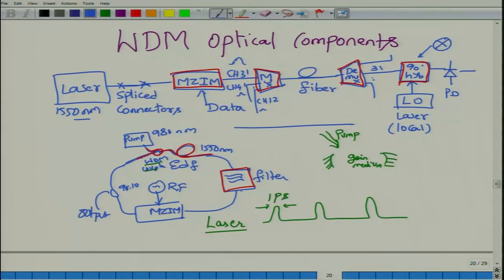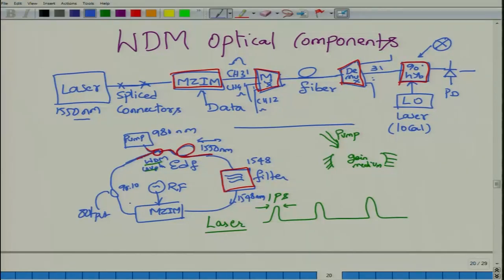For example, if you tune the filter to 1548 nanometers then the output is 1548 nanometer light circulating, which then gets modulated by the Mach-Zehnder interferometric modulator. In contrast to its use in communication systems, here the objective is not to transmit information but only to modulate the loss of the cavity — you are simply adjusting the total loss in the cavity. Nevertheless, MZIM is also a WDM component.